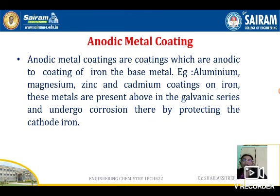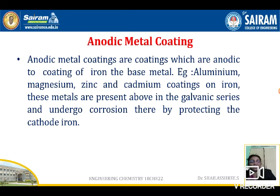These metals are present above iron in the electrochemical or galvanic series and undergo corrosion, thereby protecting the cathode — iron. Whenever two metals are taken from the electrochemical series, the metal present above acts as the anode and gets corroded, while the metal below acts as the cathode and gets protected. The anodic coating metals are those present above iron in the electrochemical series.